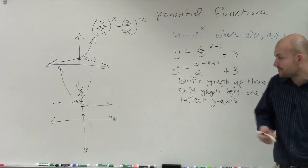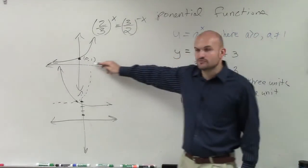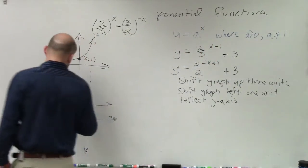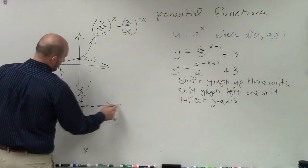There's a couple things we want to remember, though. Remember our asymptote is originally at y equals 0. So if I move the graph up three units, my asymptote now is at y equals 3.